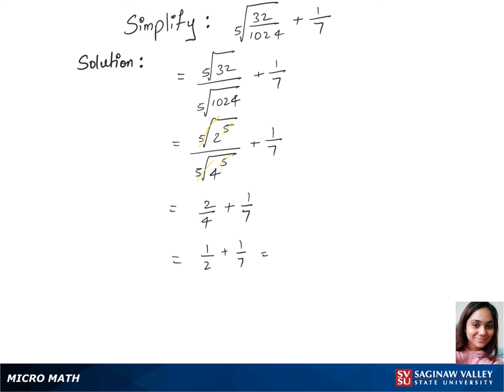We'll add this up now, so that's 7 plus 2 over 14. We are doing an LCM for the denominators. Now it's 9 over 14, that's our final answer to this question.